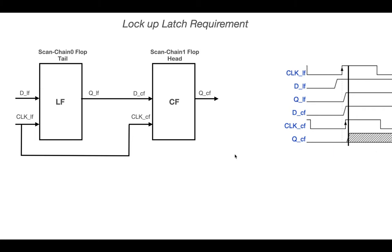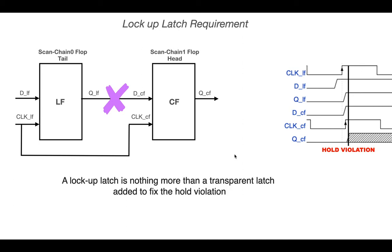Consider the scenario where two scan chains are to be connected together to decrease the number of scan chains at the top level. The tail flop of scan chain 0 is connected to the head flop of scan chain 1, and both these flops operate at the positive edge of the same clock. There is a high possibility that a hold violation can occur. To avoid this hold violation, we need to add a lockup latch — a transparent latch added to fix the hold violation.